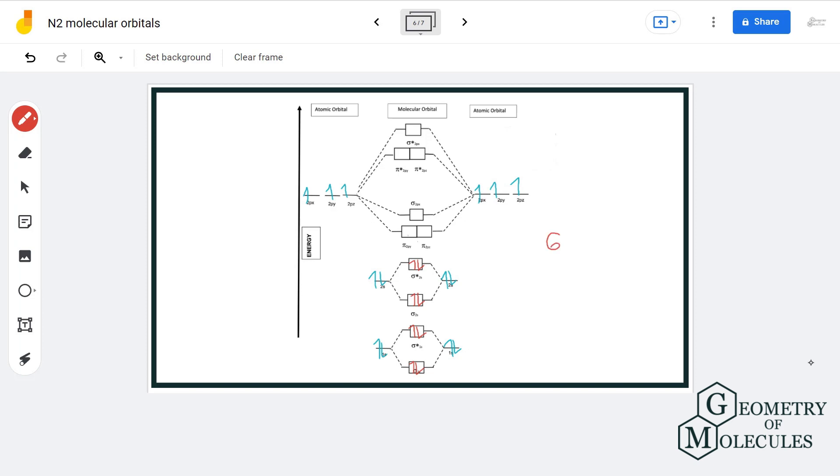Now we are left with six more electrons. Based on the energy values, next electrons will go in pi 2py and pi 2pz. We are still left with two more that will be going into sigma 2px.